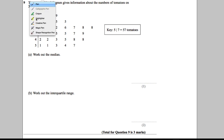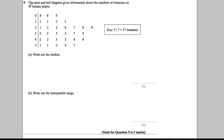Question 9 is a stem and leaf diagram question. The stem and leaf diagram gives information about the number of tomatoes on 31 tomato plants, so there are 31 pieces of data. The key tells us that 5|7 means 57 tomatoes.